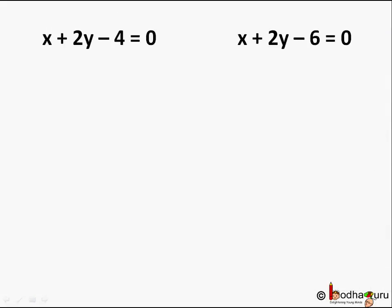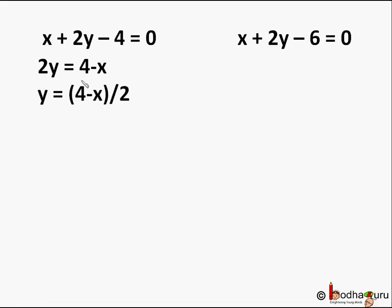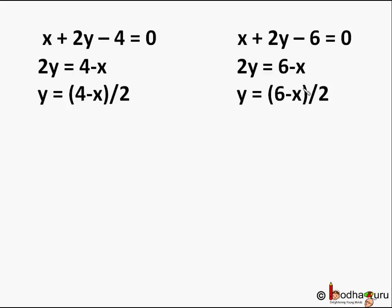We have two linear equations here: x + 2y - 4 = 0 and x + 2y - 6 = 0. Let us simplify the first equation: x + 2y - 4 = 0, or 2y = 4 - x, or y = (4 - x) / 2. And for the second equation: x + 2y - 6 = 0, or 2y = 6 - x, or y = (6 - x) / 2.